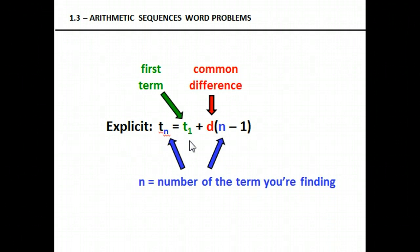T sub 1 or U sub 1 will be the first term. Don't forget that d is your common difference, and n is the number of the term you're finding or looking for. This n is always going to be the same as this n. If you were looking for the seventh term, this n will be 7.